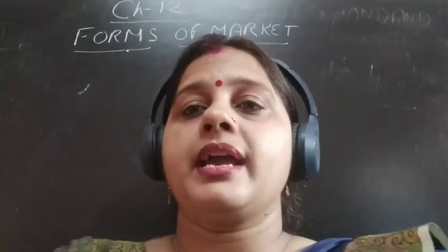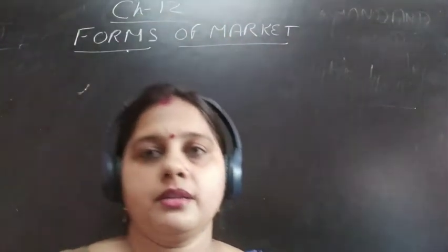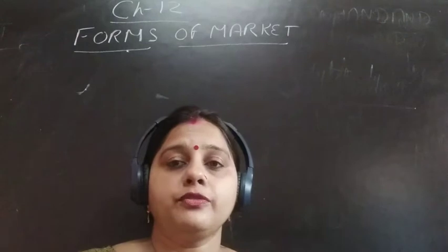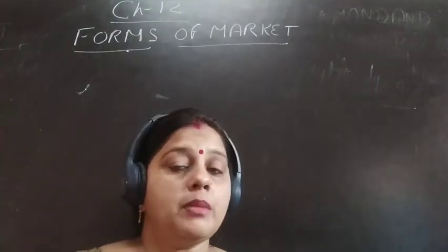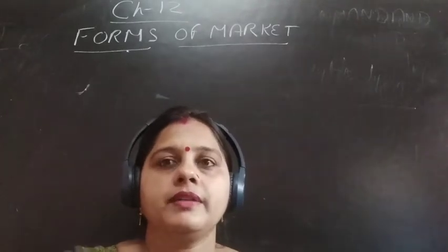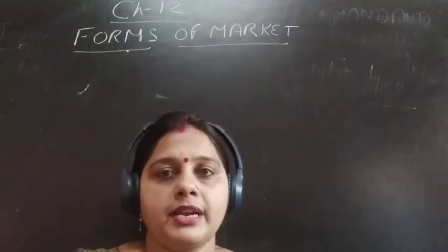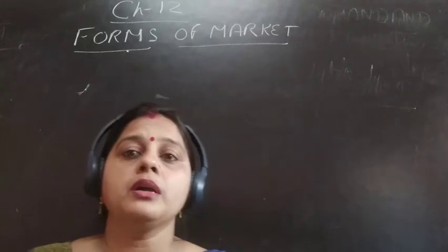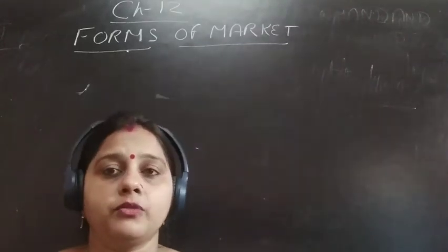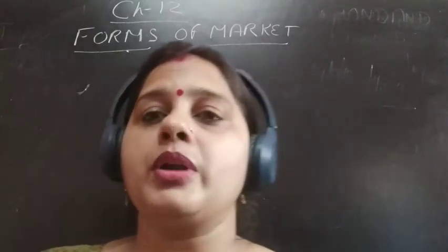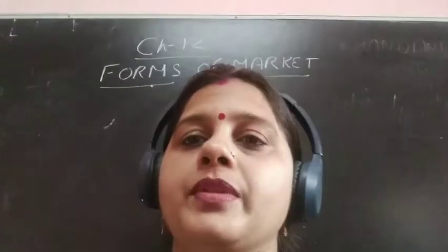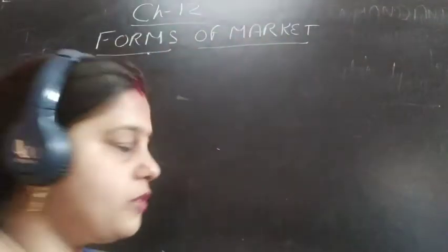The next topic, and the main topic, is the forms of market. There are four forms of market. This is also connected to the revenue chapter, where we have a topic called the revenue curve under different forms of market. So forms of market are there.